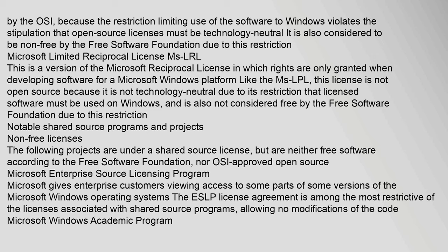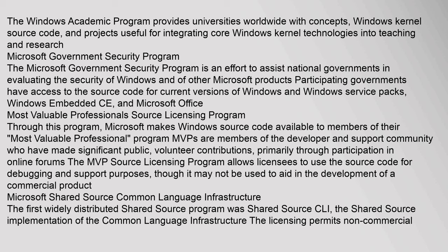Notable Shared Source Programs and Projects — Non-Free Licenses: The following projects are under a shared source license but are neither free software according to the Free Software Foundation nor OSI-approved open source. Microsoft Enterprise Source Licensing Program: Microsoft gives enterprise customers viewing access to some parts of some versions of the Microsoft Windows operating systems. The ESLP license agreement is among the most restrictive, allowing no modifications of the code. Microsoft Windows Academic Program: The Windows Academic Program provides universities worldwide with Windows kernel source code and projects useful for integrating core Windows kernel technologies into teaching and research. Microsoft Government Security Program: This is an effort to assist national governments in evaluating the security of Windows and other Microsoft products. Participating governments have access to the source code for current versions of Windows and Windows service packs, Windows Embedded CE, and Microsoft Office.